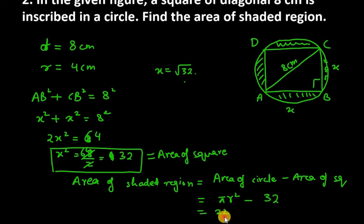πr² is 22/7, r is 4 squared, that is 16, minus 32. So when you solve this, you will get your answer as 18.286 cm². So this is the answer for question number 2.